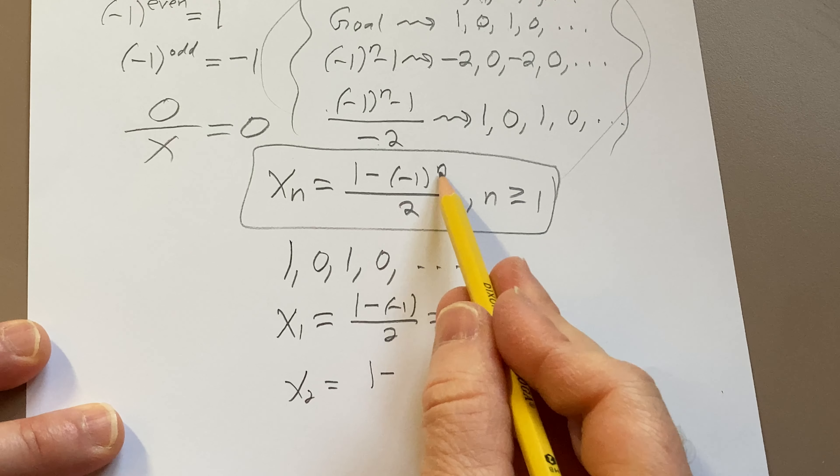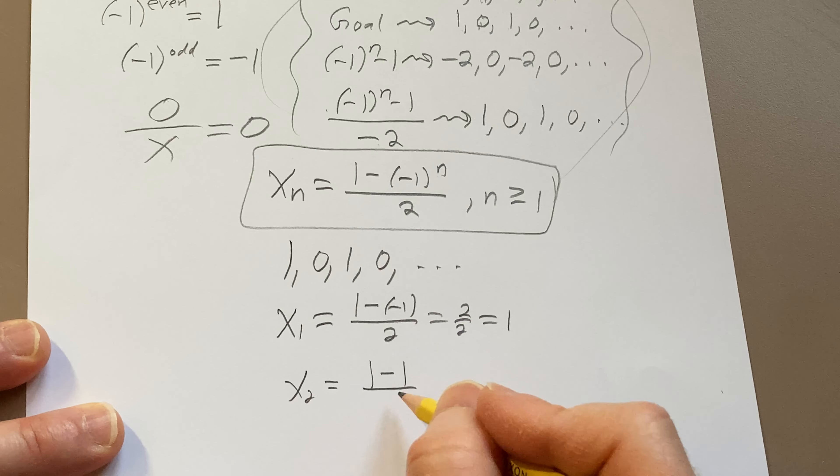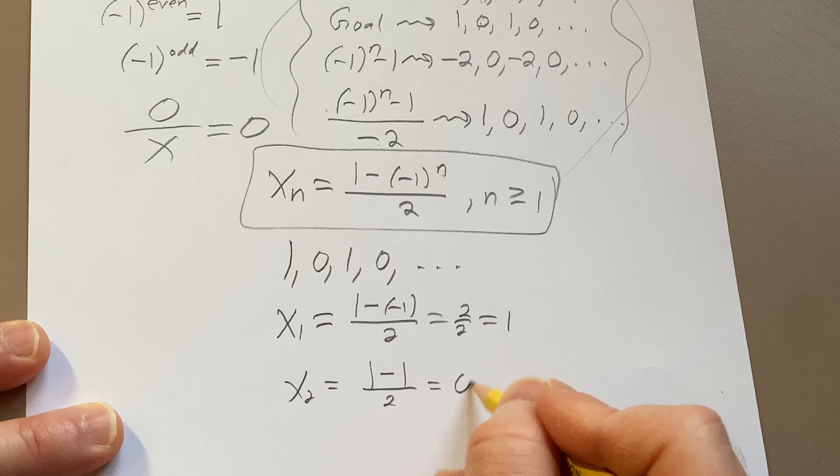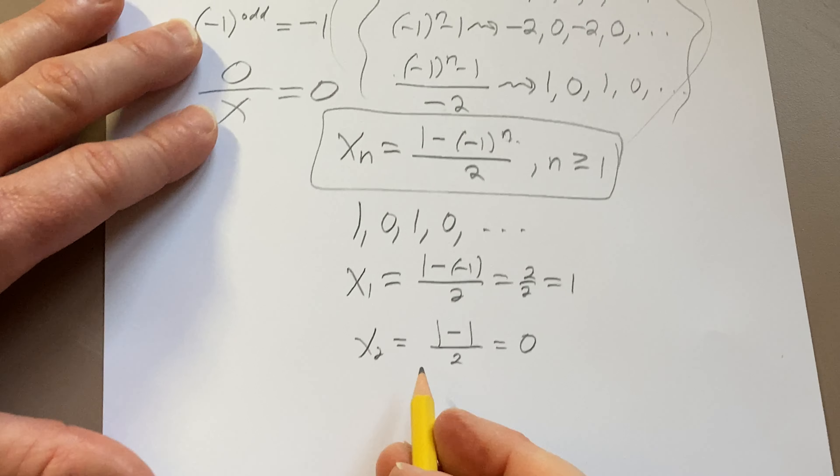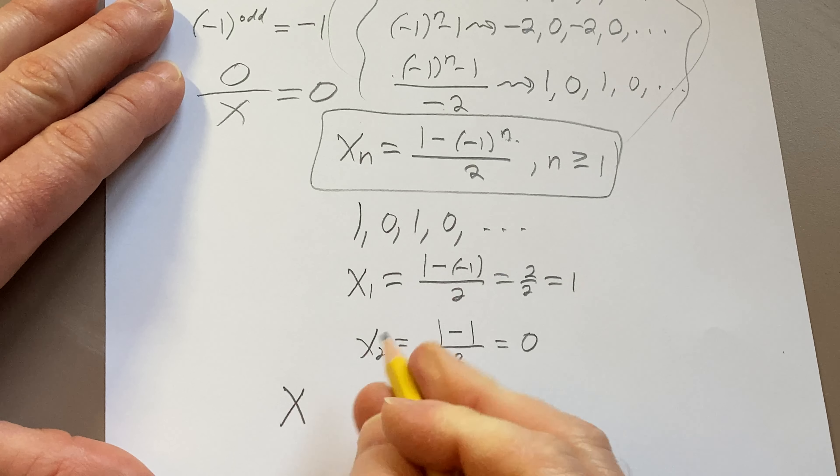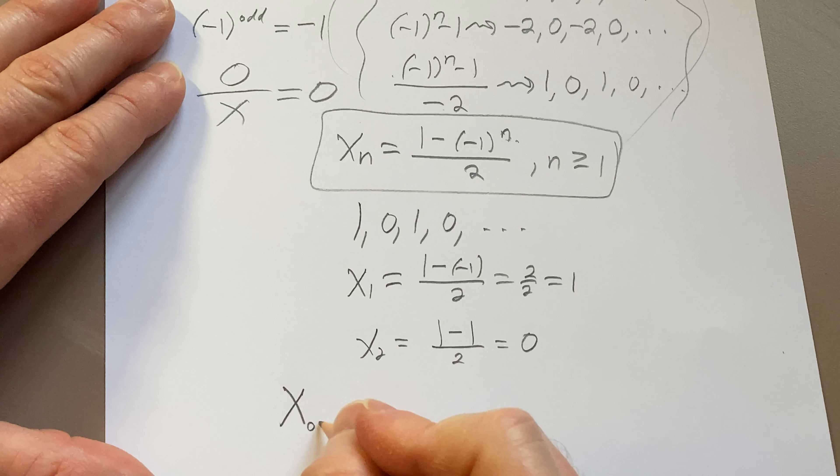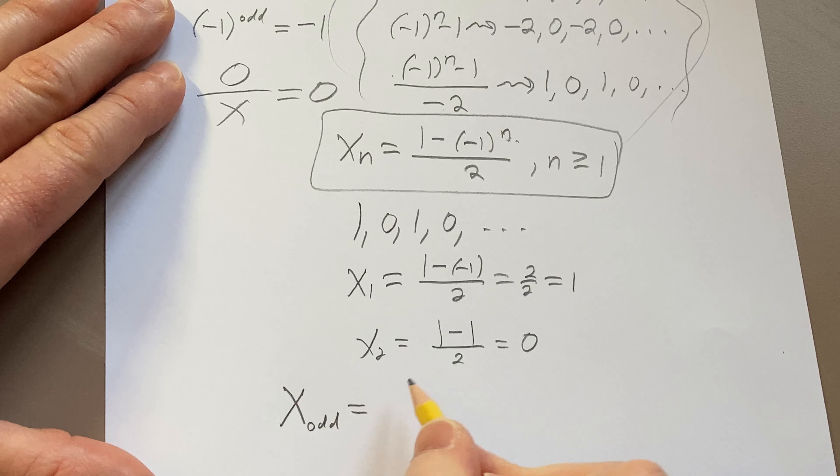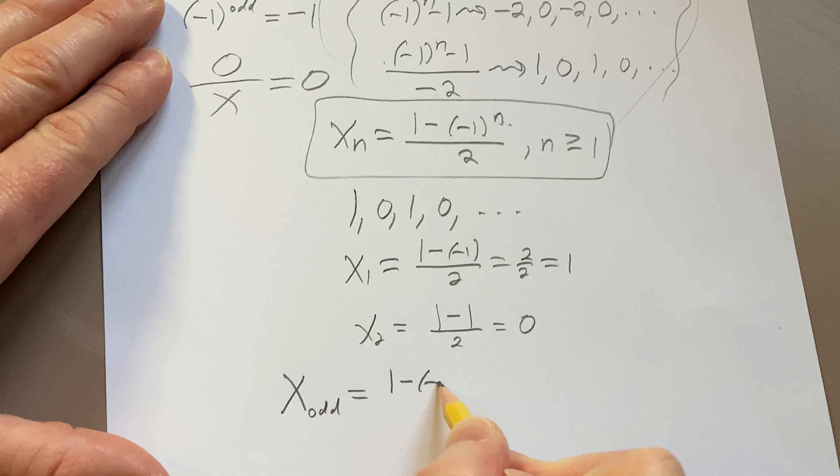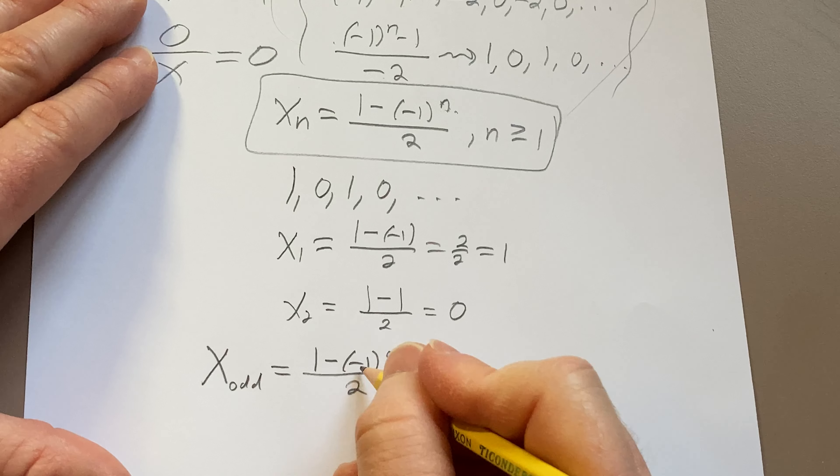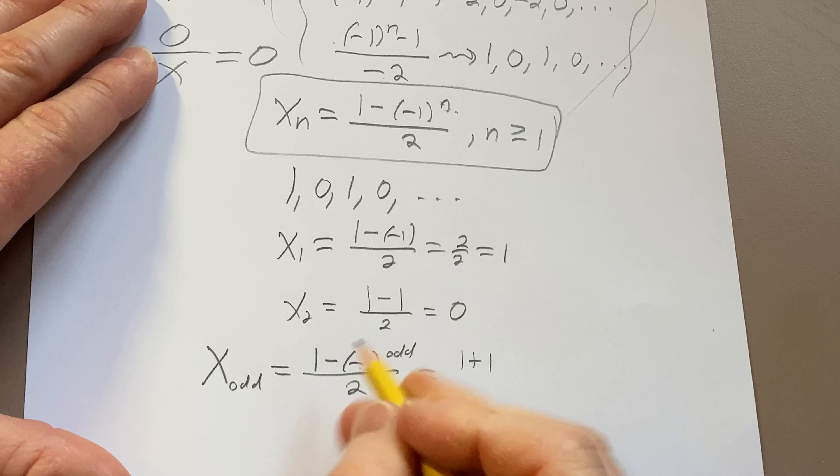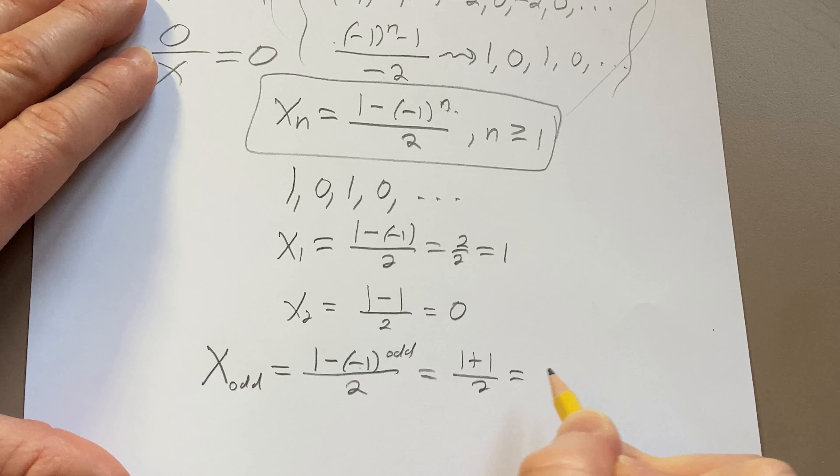1 minus, well, it's going to be 1 when you plug in 2. So whenever it's even, right, whenever it's even, let's just check. Let's check it another way. So if we have x and we have odd, that's going to give us [1 - (-1)^odd] / 2. So it's going to be -1, so 1 plus 1, because it's 1 minus -1, which is 1.